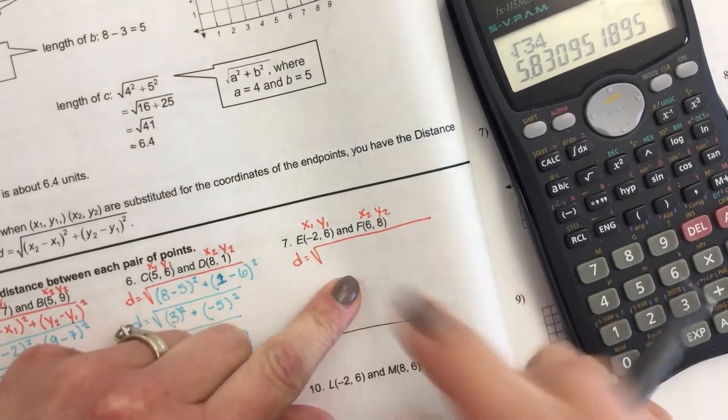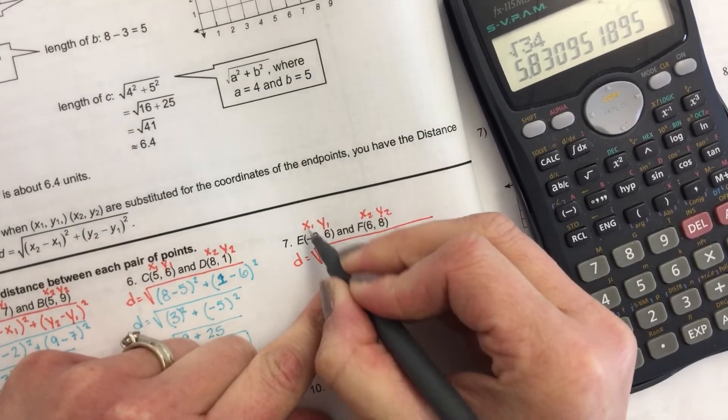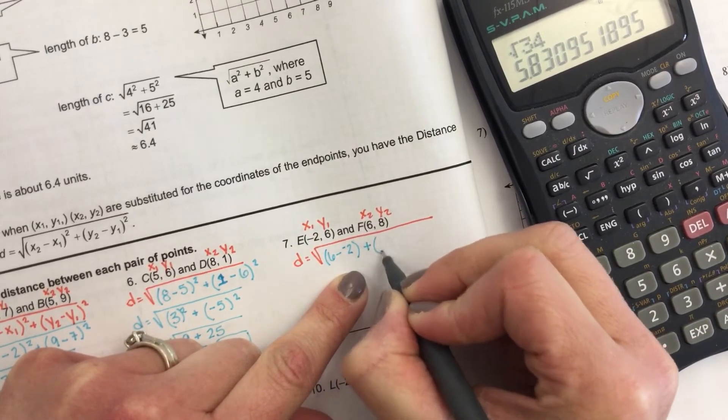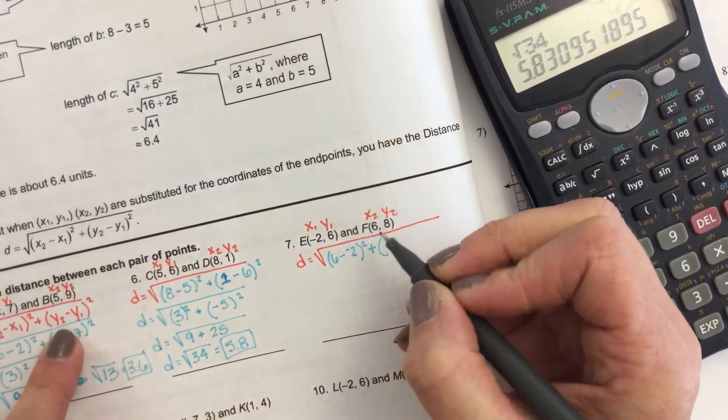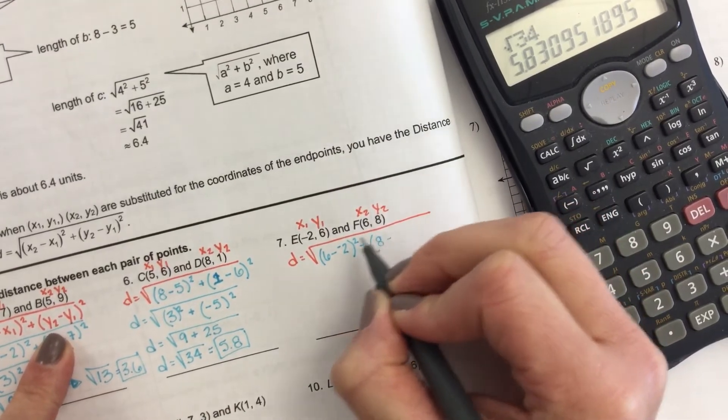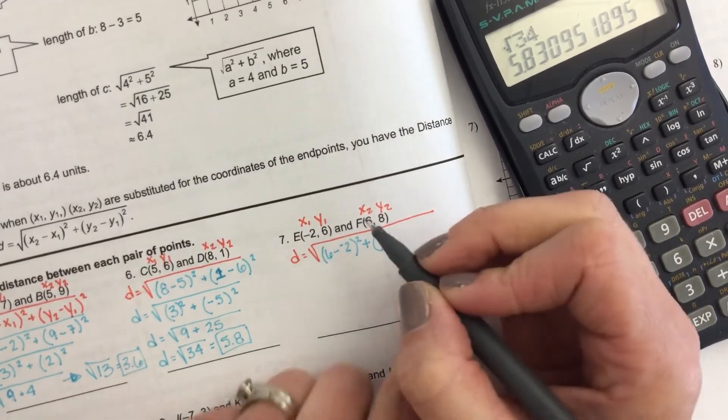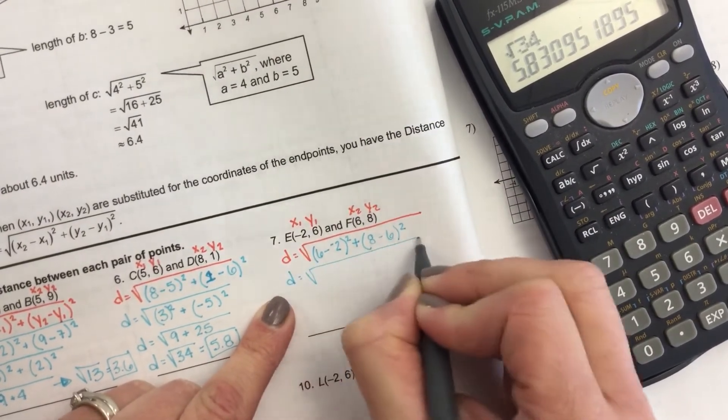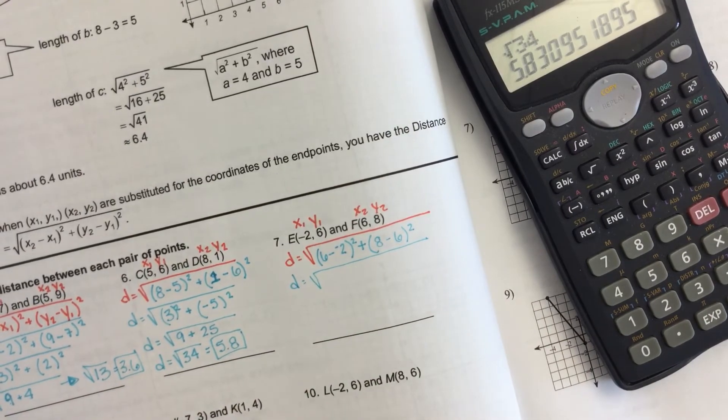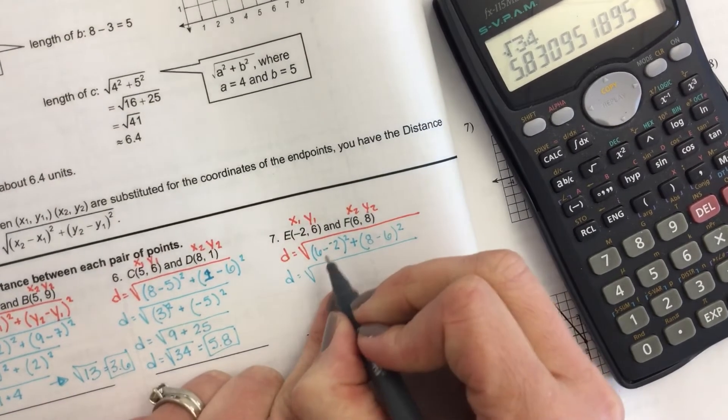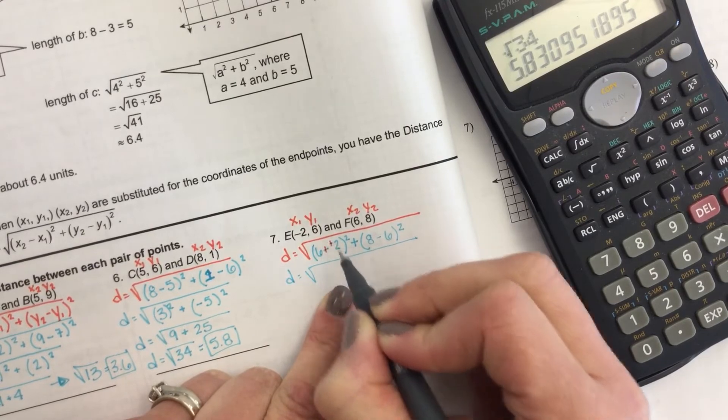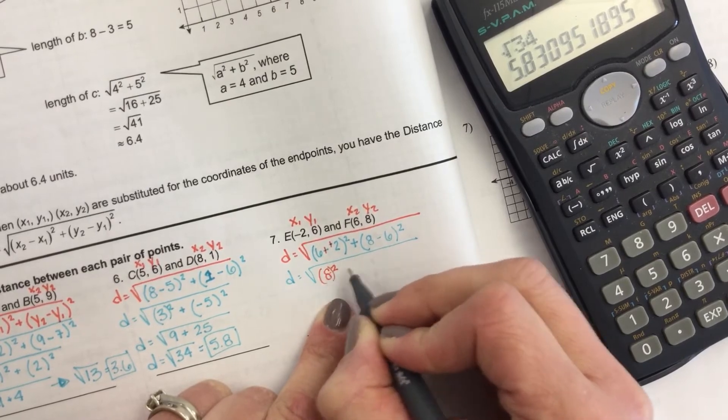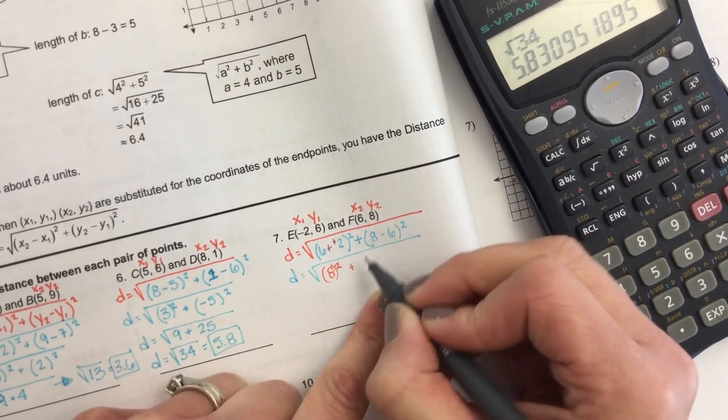x2 is 6, x1 is negative 2. y2 is 8, and y1 is 6. Okay, so one thing that's going to happen here is when you subtract a negative, it actually turns into adding. So this is 6 plus 2, which is 8. And then this is 8 minus 6, which is 2.